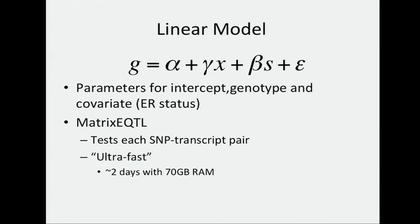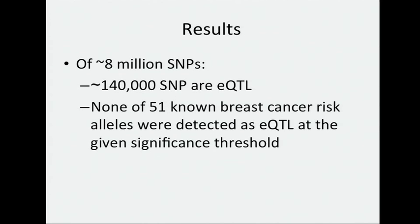Matrix EQTL uses large matrix operations to optimize the testing for every SNP-transcript pair, of which we had about 1.2 trillion — which is a lot. Along with using ER status as a covariate, we also did EQTL detection in ER-positive alone and ER-negative alone.